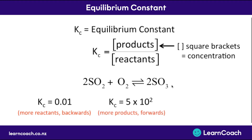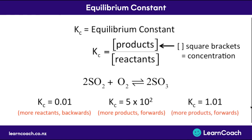These situations have two names. If there are more reactants it's called a backwards reaction, because more products are turning back into reactants than reactants turning into products. If there are more products it's called a forwards reaction. If we had a Kc of around 1, there'd be about the same number of products as reactants. In this case it's 1.01, so there are slightly more products, so technically we could call it a forwards reaction. Number one is the cutoff point for Kc.